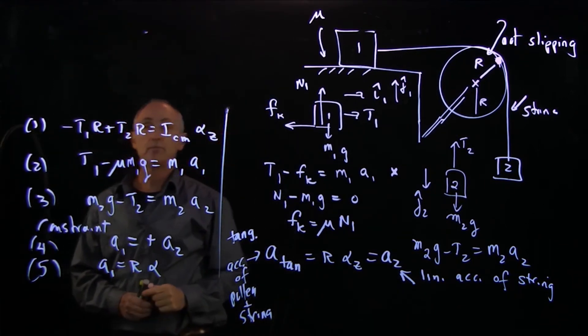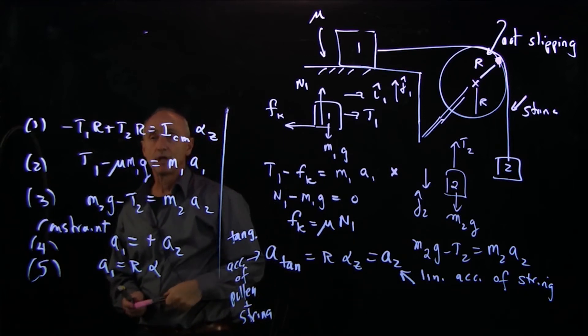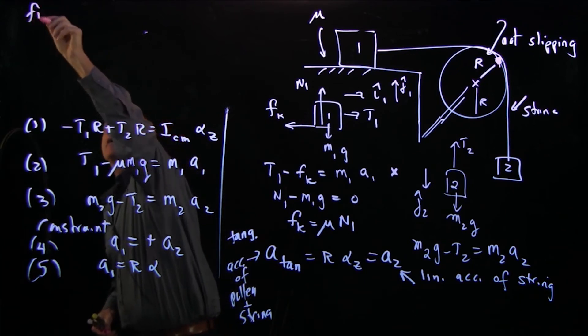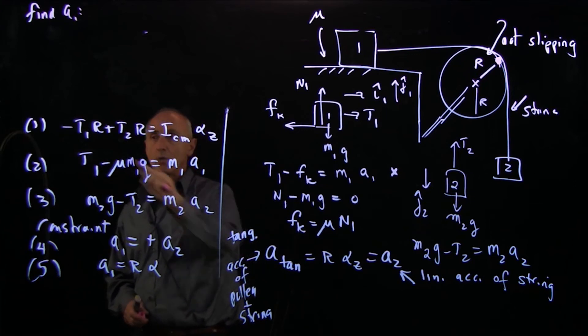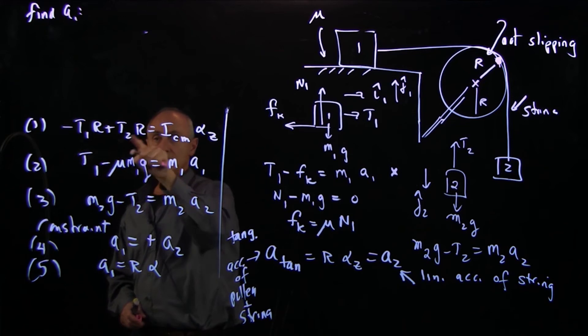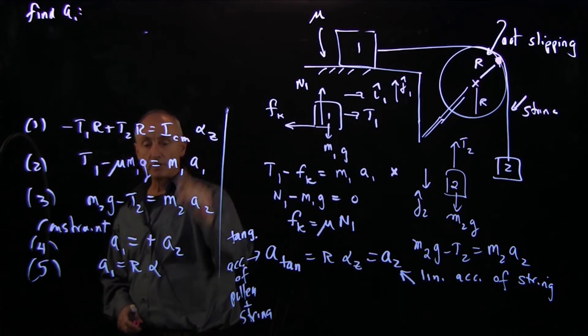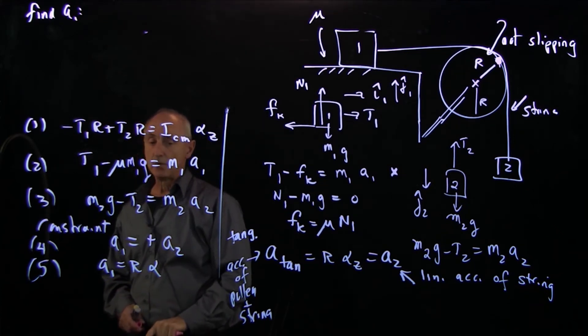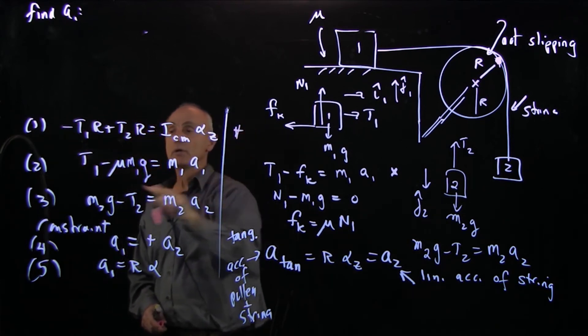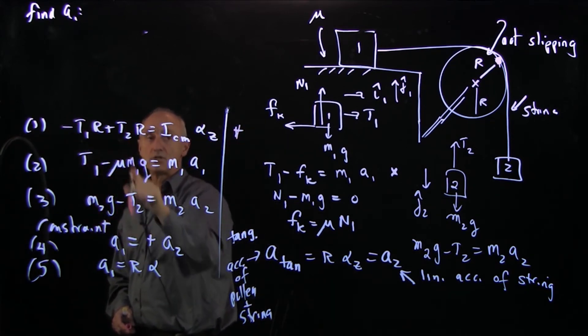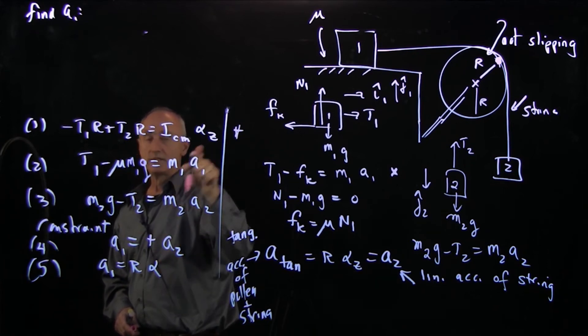Now I look at this system and I say to myself, which equation do I want to use as a backbone? My target is to find A1. A1 is equal to A2. When I look at these equations, T1 depends on A1, T2 depends on A2 which is equal to A1, and alpha is also related to A1. So I can use this equation 1 as my backbone and substitute in T1, T2, and alpha into that equation.